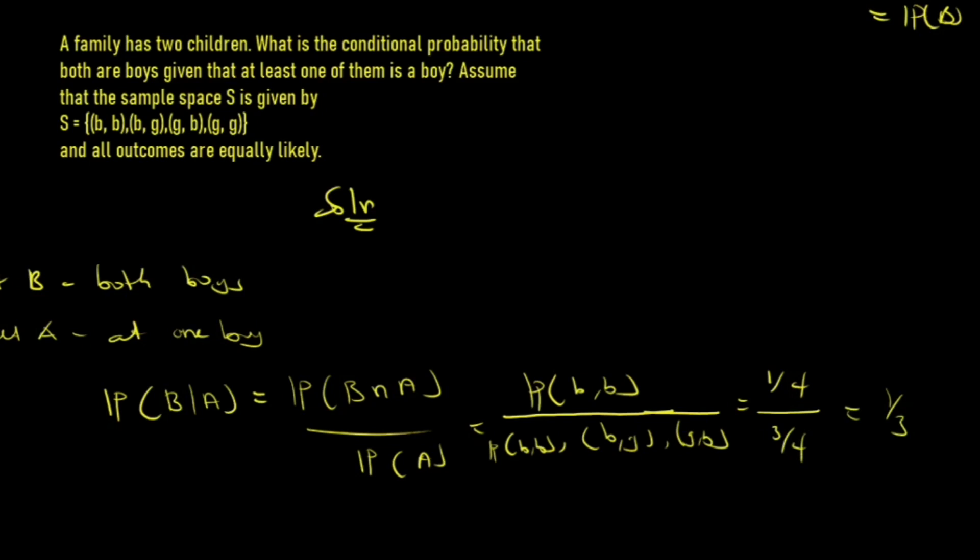So P(B∩A) is 1/4 and P(A) is 3/4, giving us P(B|A) equals 1/3. The answer is 1/3 — very simple. We used conditional probability: P(B|A) = P(B∩A)/P(A), where both boys intersecting at least one boy gives boy-boy, and at least one boy covers three of the four sample space outcomes.